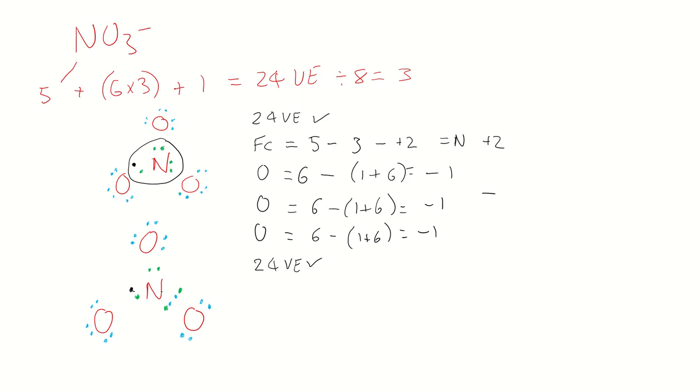Now let's look at the formal charge of nitrogen. So nitrogen will equal five minus, this time we have one, two, three, four bonds, because it's a double bond. And there's no dots that are free, so minus four would equal plus one.